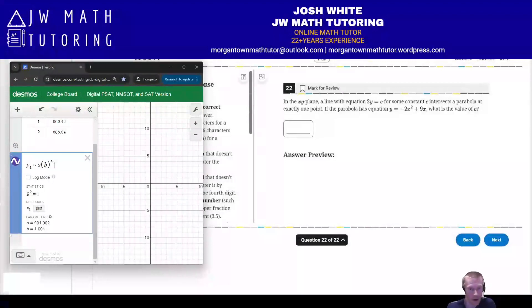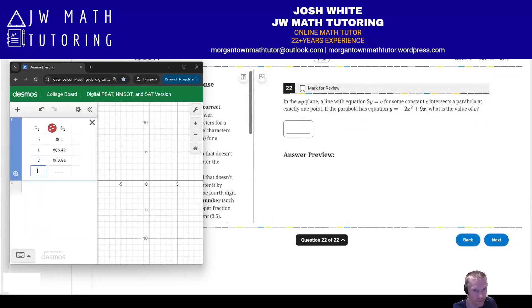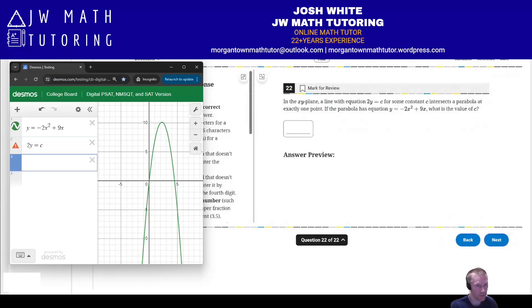Here we have Practice Test 1, Module 1, Blue Book app, number 22. And this one we're just going to solve by graphing both equations and using a slider. So you notice here, it didn't give me the option to add the slider right away, so I can just type C equals whatever number, and then just set the default parameters, negative 10 to 10.